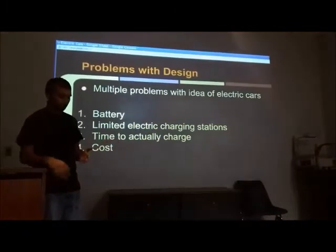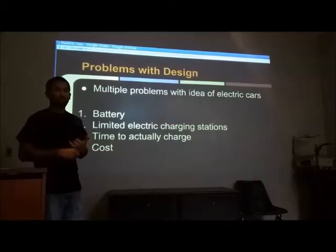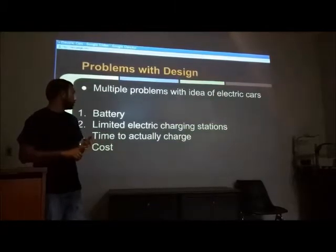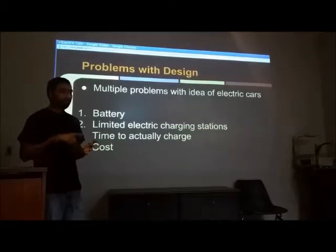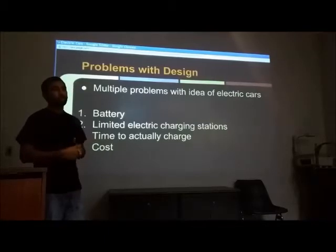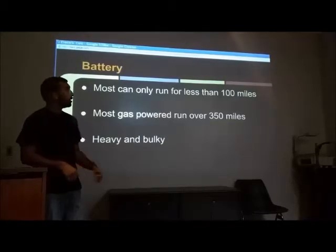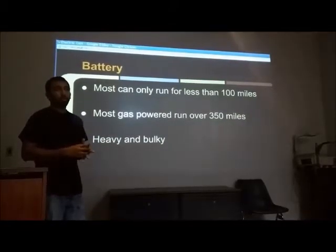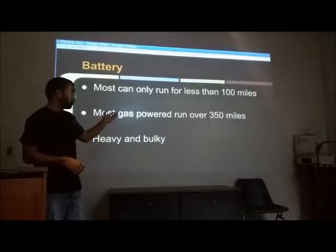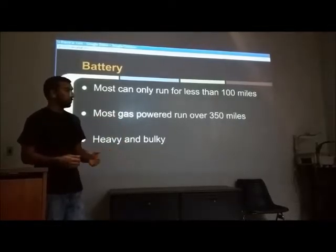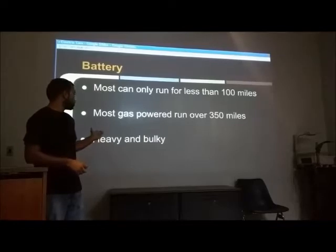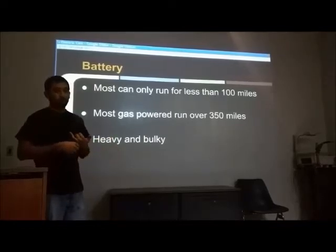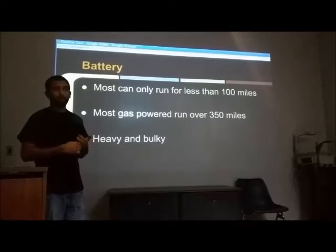The problems with this design: the biggest issues that come with electric cars are the battery, the limited amount of charging stations, the time it takes to charge, as well as overall cost. For example, on the majority of these electric cars the maximum range you can go is 100 miles, while most gas-powered cars can go over 350 miles. These batteries are also heavy and bulky, which affects the cost of the car as well as having a negative effect on weight.